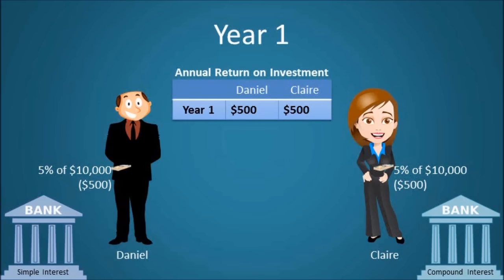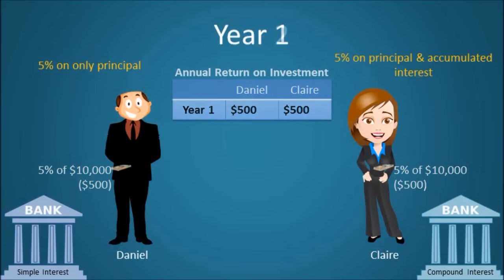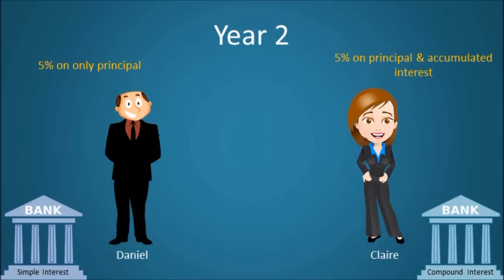Because Daniel's bank only offers simple interest, he will continue to make $500, or five percent of his principal investment of $10,000, each year. On the other hand, because Claire's bank offers compound interest, she will make five percent on not only her principal investment of $10,000, but also on her accumulated interest from previous periods. So in year two, Claire will earn five percent on both her principal as well as on the interest she earned in year one, rather than five percent on only her principal deposit of $10,000.